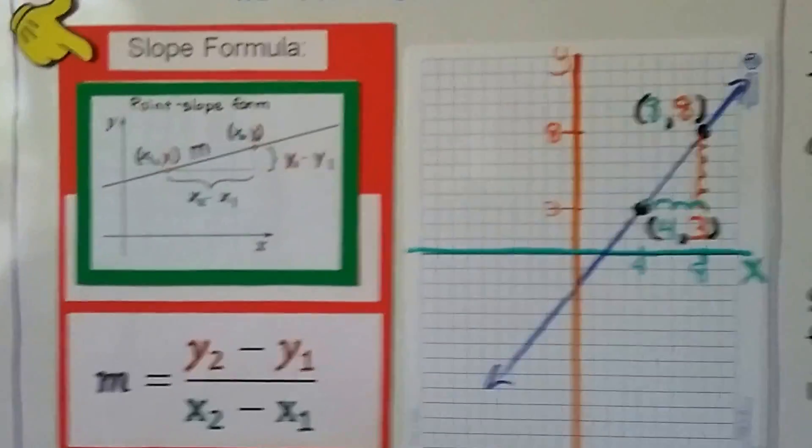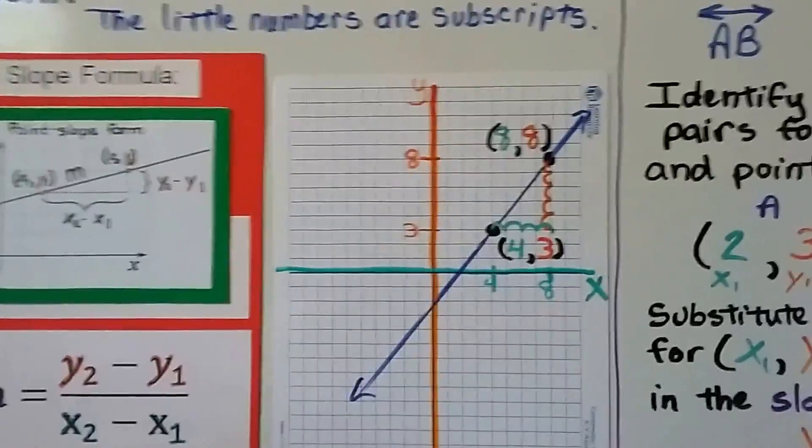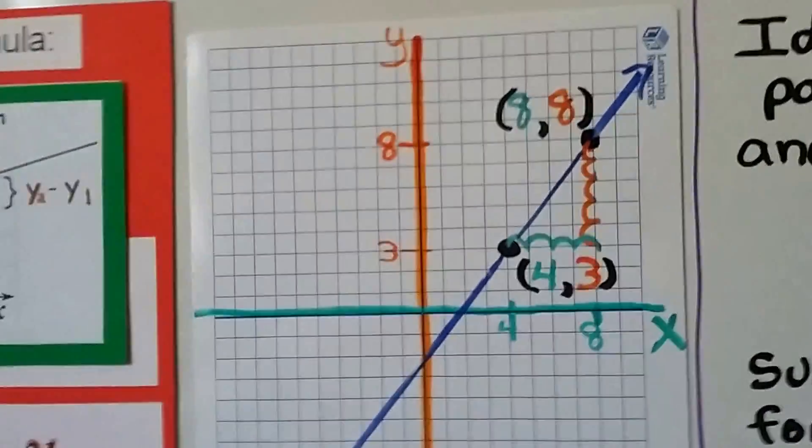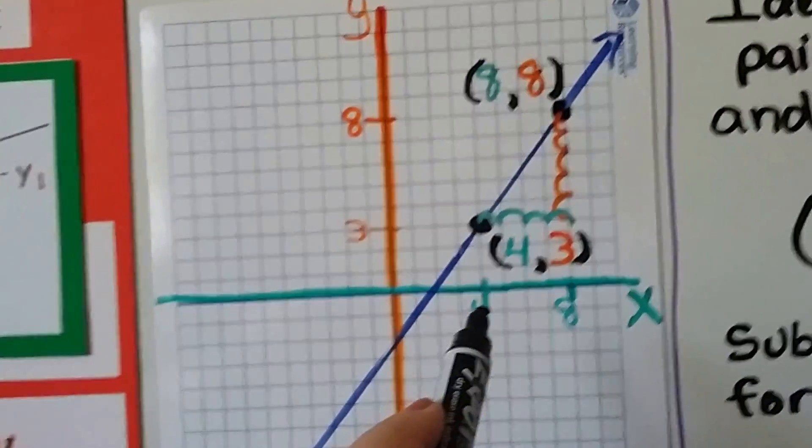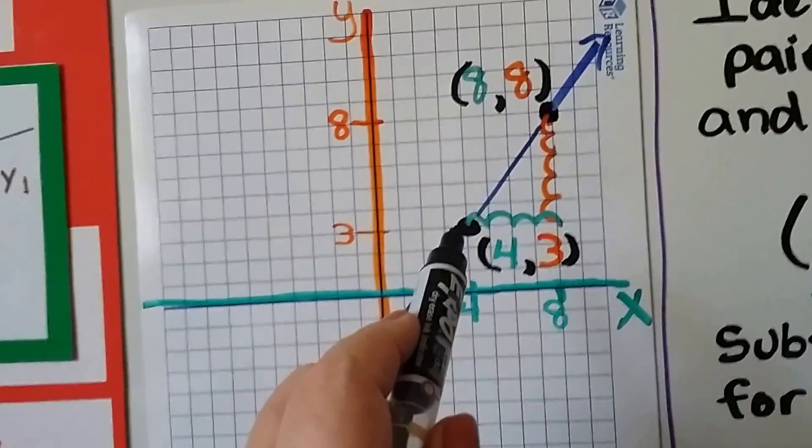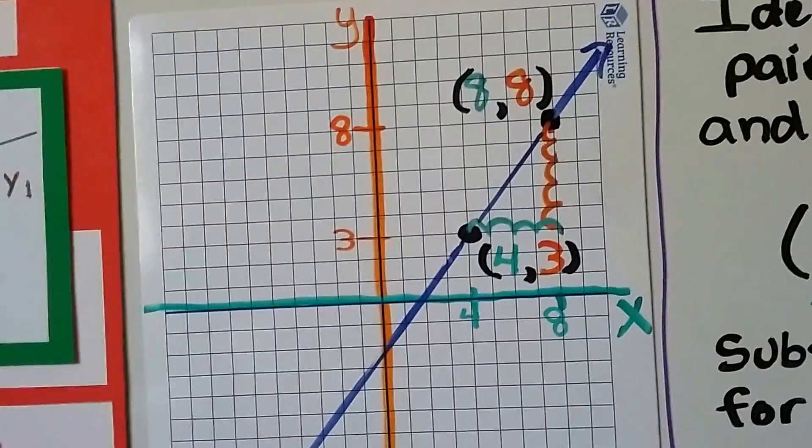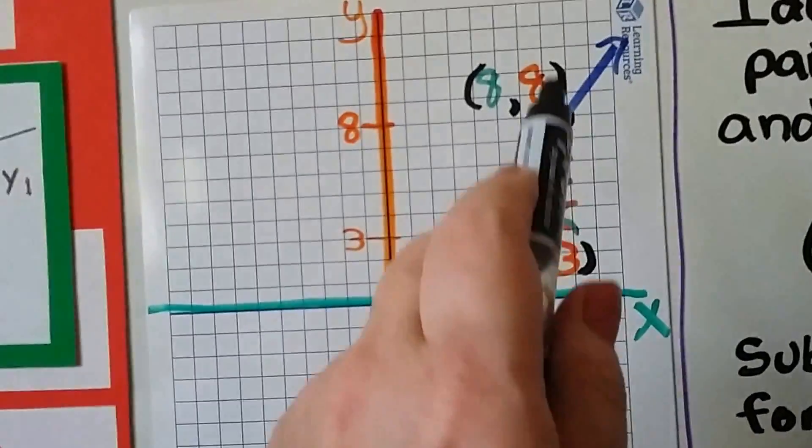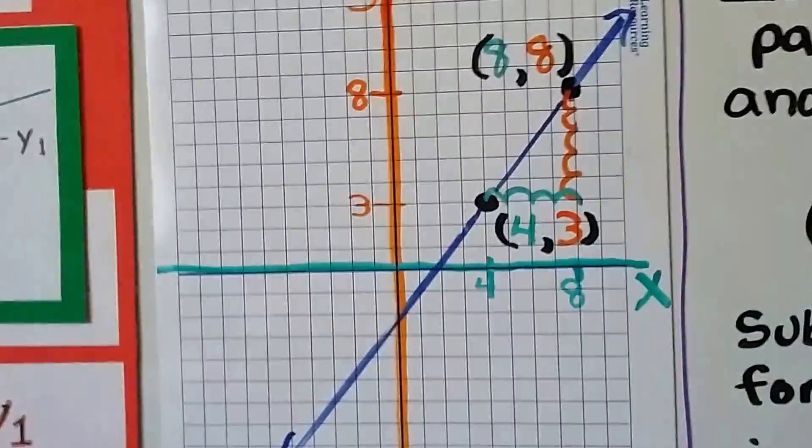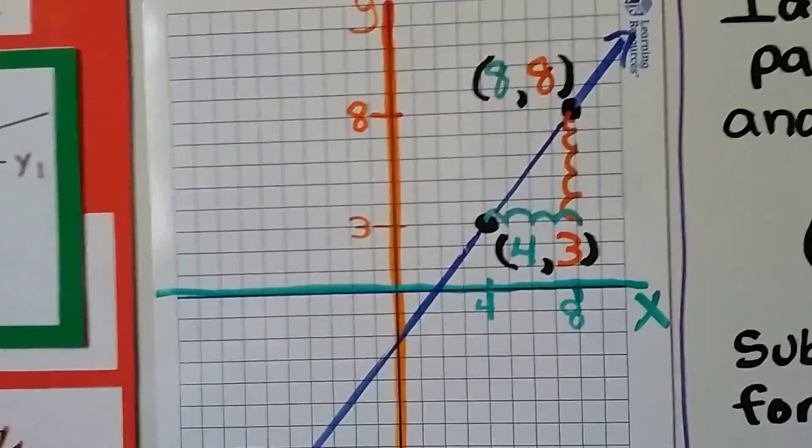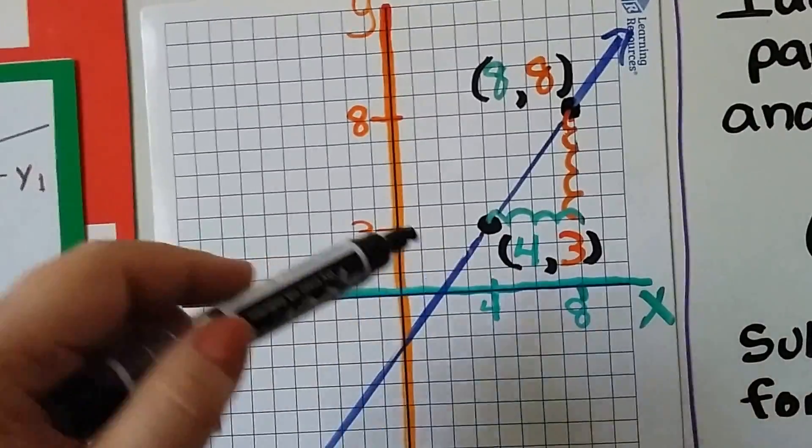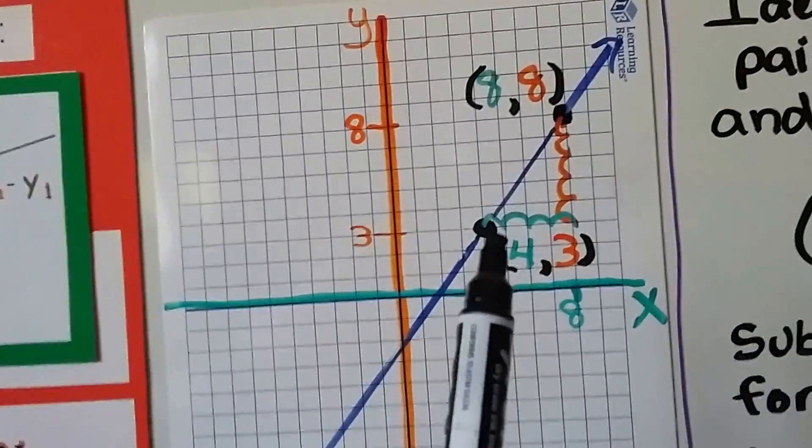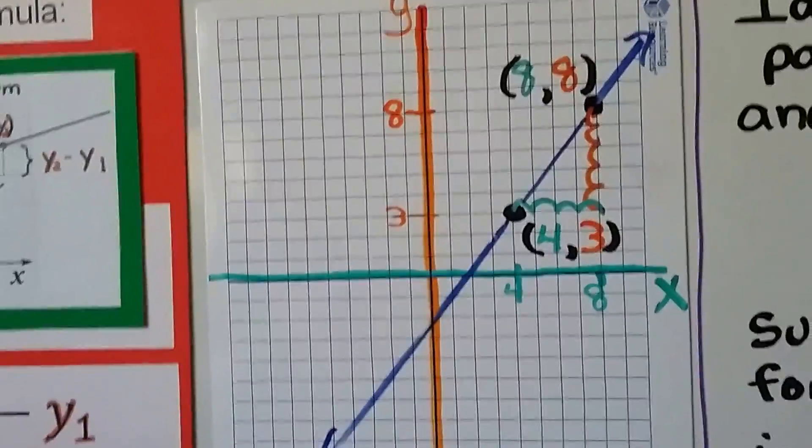So take a look at this. Here we have a graph, and we have a line that's graphed here. We have a point for the first x is a 4, and the first y is a 3. So we've got 4, 3. That's our ordered pair. Then we've got 8 for x and 8 for y, and a line is drawn through them. And we can see the rise and the run. The rise, we just count the boxes. 1, 2, 3, 4, 5. The run is 1, 2, 3, 4.